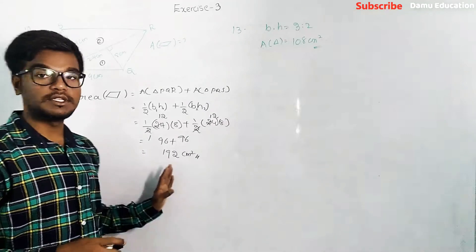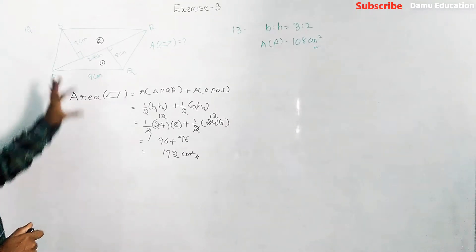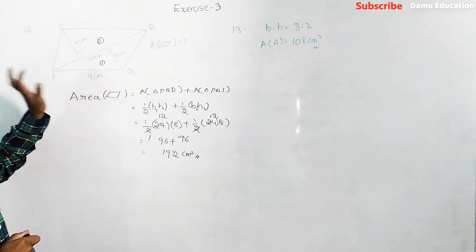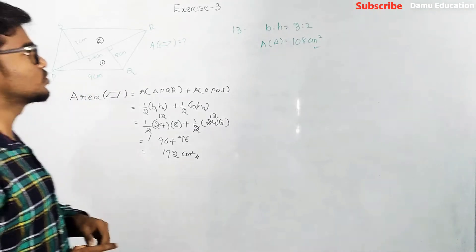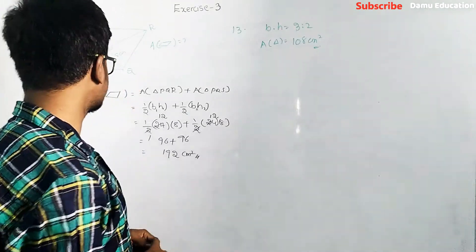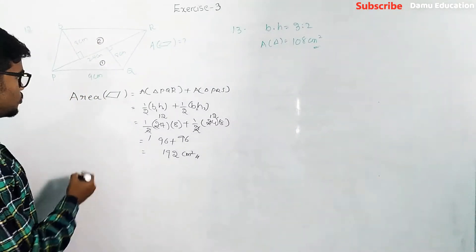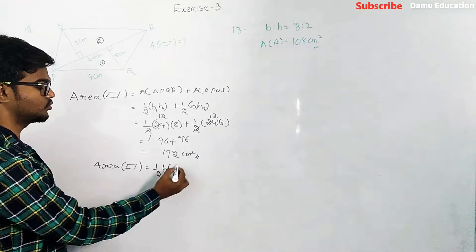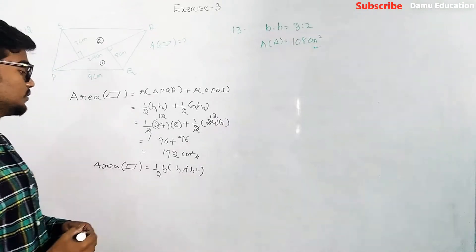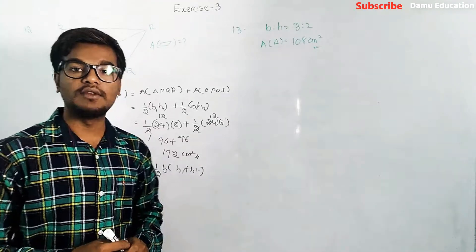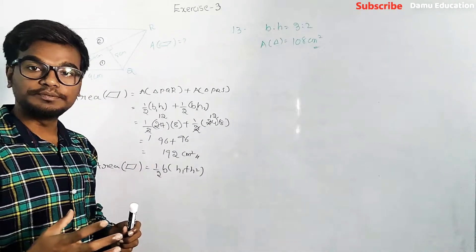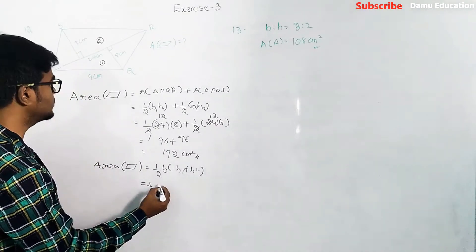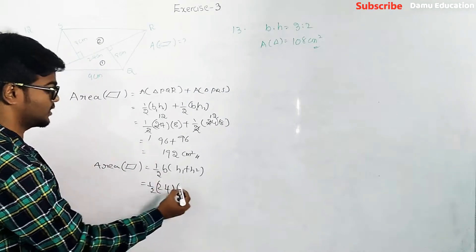Another method: we can directly find the height of the parallelogram. The formula becomes: area of parallelogram = ½ × base × (h1 + h2), where the base is common to both triangles. Here, base is 24 and h1 + h2 = 8 + 8 = 16.